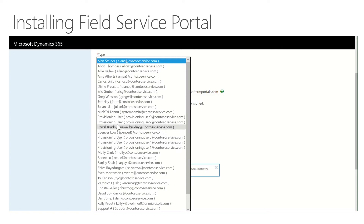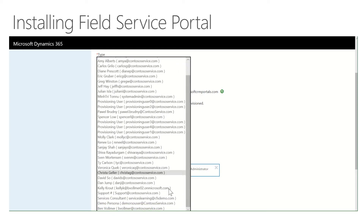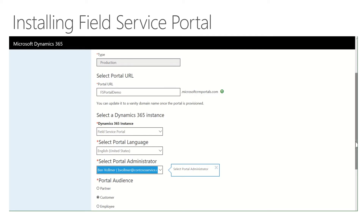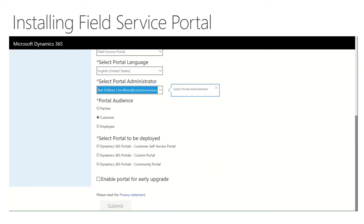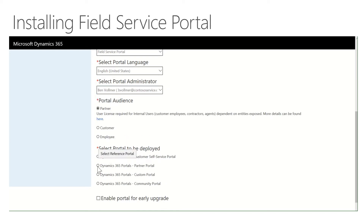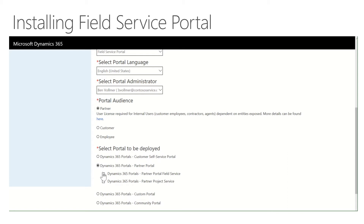I'm going to pick who my admin is — I'm going to pick myself here. I have the ability to pick audiences. I'm going to pick the partner audience and the partner portal. Then I'm going to click field service here. If you don't do that, I'll show you where to deploy it later, but we're going to click the field service portion here.